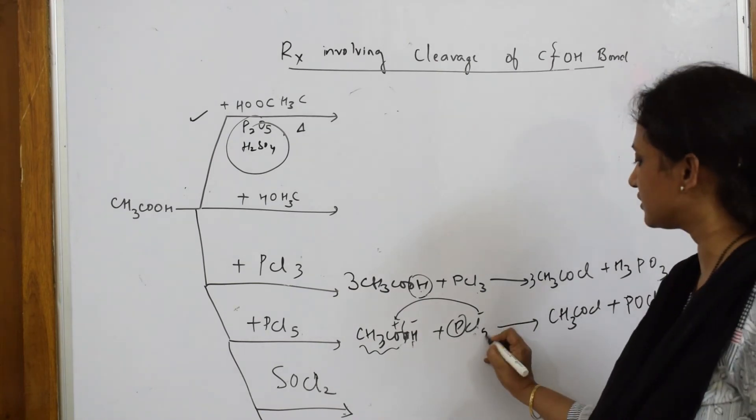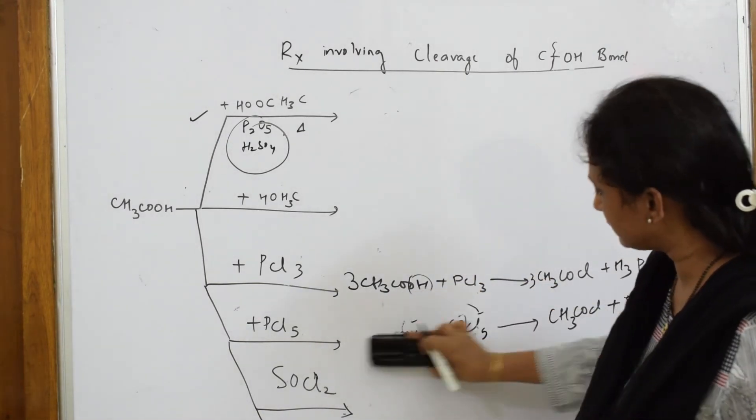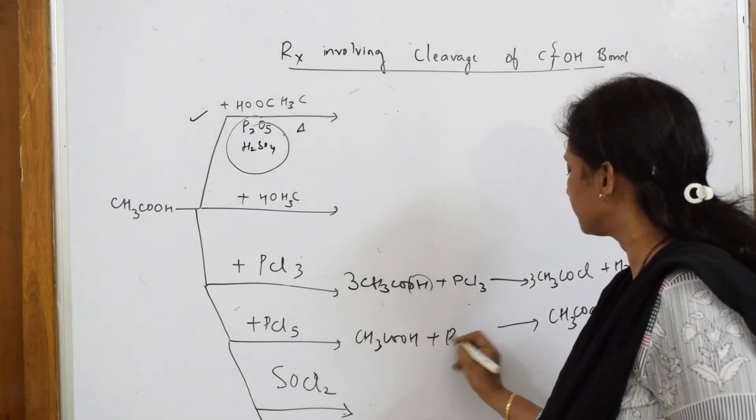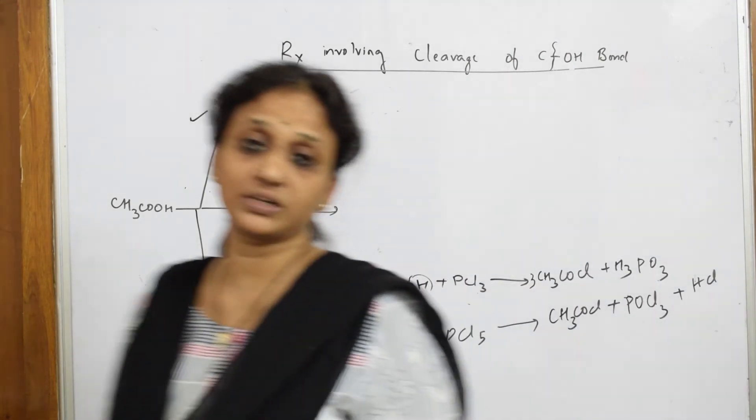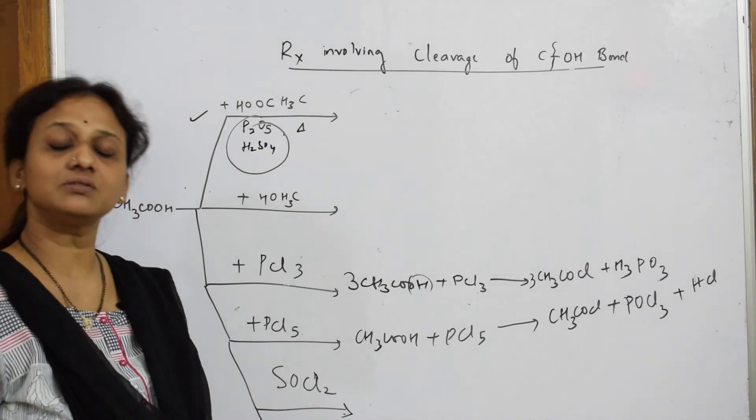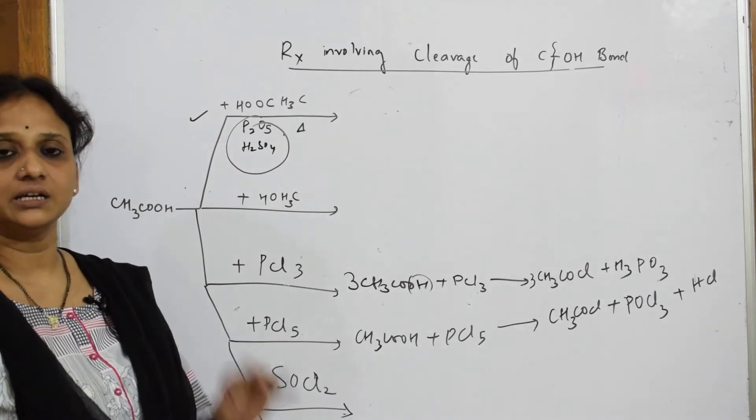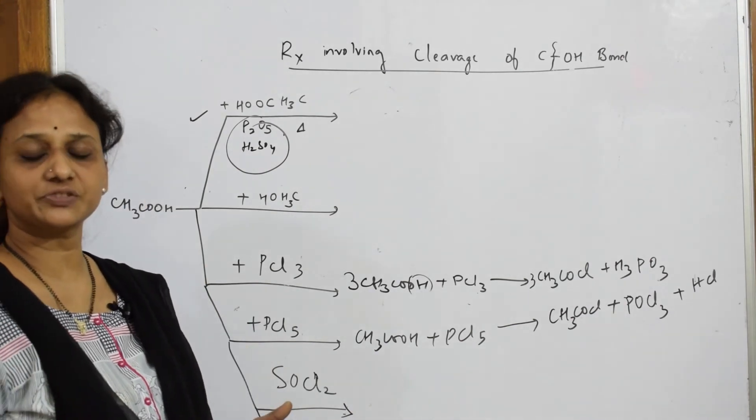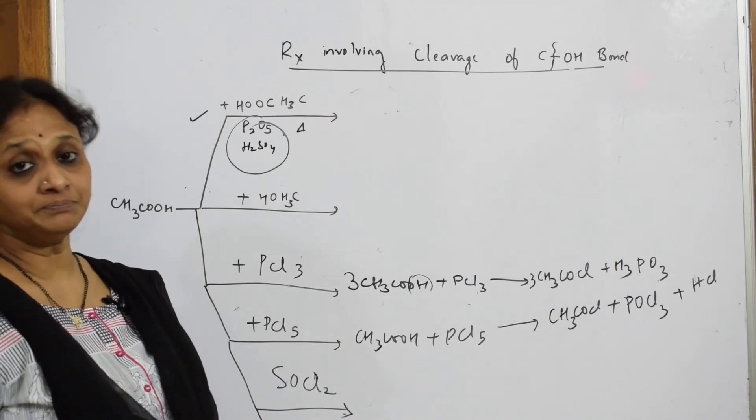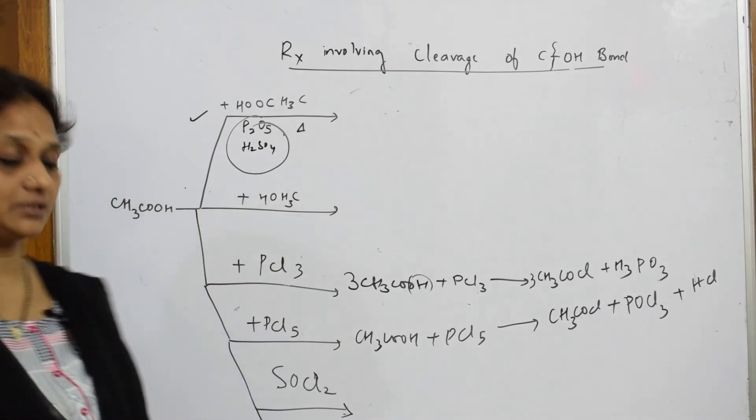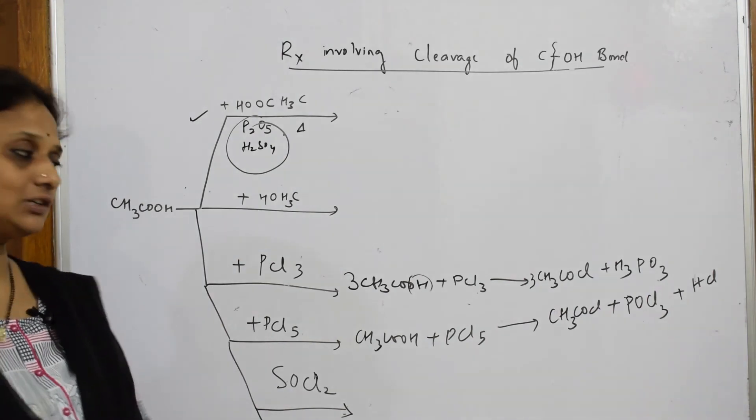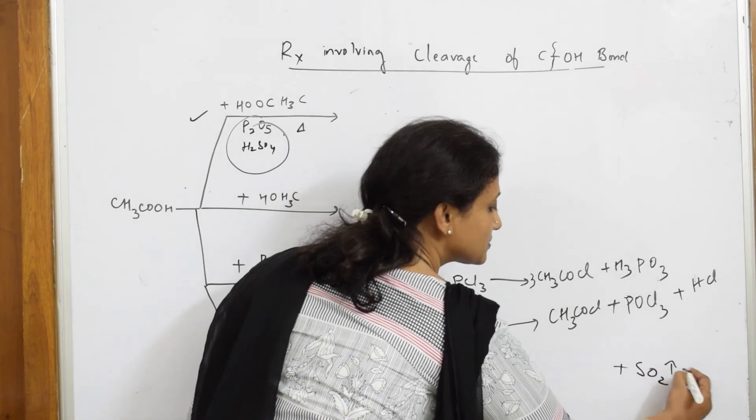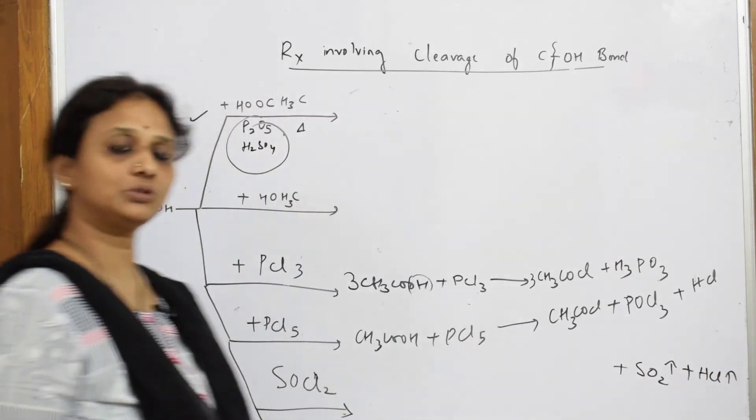Now I have to start with thionyl chloride. SOCl2 is thionyl chloride. We very well know whenever you are heating thionyl chloride, the first byproduct which you get is sulfur dioxide gas. That is why we prepare haloalkanes from thionyl chloride - most economical method. As soon as you see thionyl chloride in the exam, try to write both gaseous products: sulfur dioxide gas and HCl vapor. Both are out.